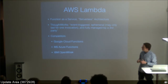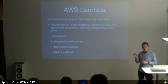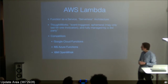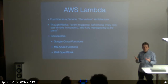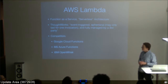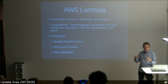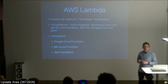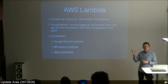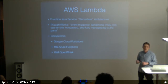Maybe the best definition comes from ThoughtWorks: event triggered, ephemeral, and fully managed by a third party. Event triggered means it could be an API call, or Alexa calls you, or something gets uploaded to S3 — that's an event that triggers your code. Ephemeral means it runs only for a short time, maybe 20 or 100 milliseconds to compute the result, and then the server goes away. It's fully managed by Amazon, so you don't need to say 'give me 10 servers or 100' — it starts as many as needed. You only pay for what actually gets executed, down to the individual function call.